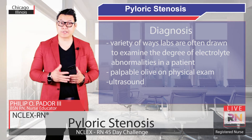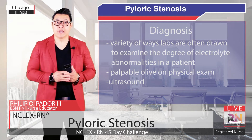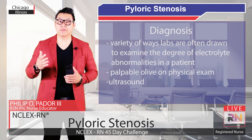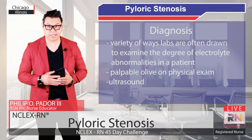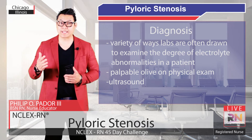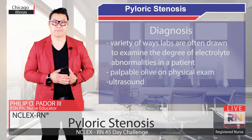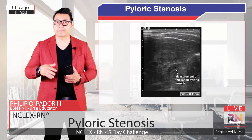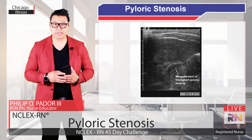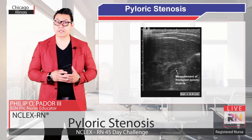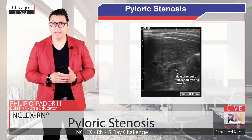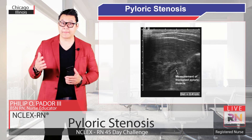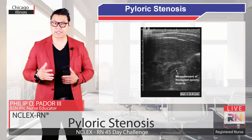In addition, as mentioned previously, a palpable olive on physical exam is also part of our diagnosis. Ultrasound is almost always diagnostic, and an upper GI contrast study can also be performed. Here we see an example of an ultrasound image showing the thickening of the pyloric muscles in pyloric stenosis. The accuracy of the ultrasound is operator-dependent, and we generally measure the pyloric muscle thickness, the pyloric diameter, and the pyloric muscle length.